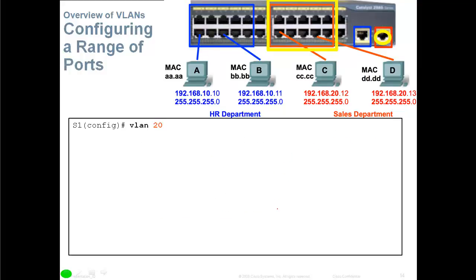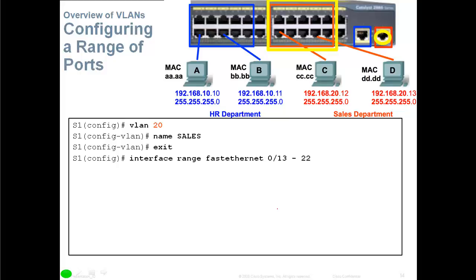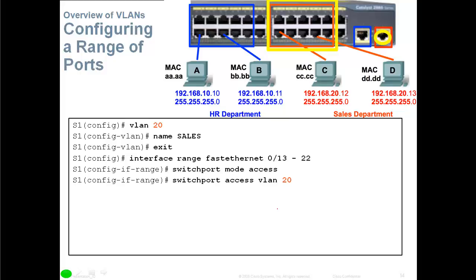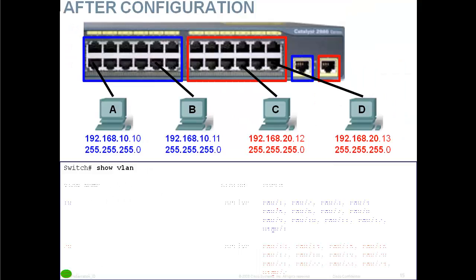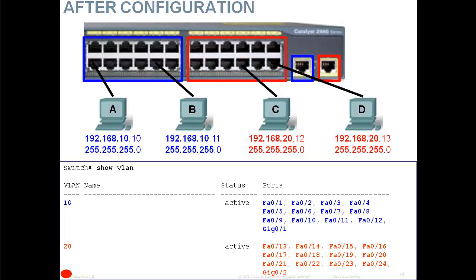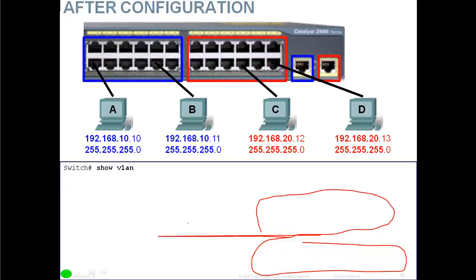Now for VLAN 20: first create the VLAN with 'vlan 20' and give it the name 'Sales'. Exit, then go to 'interface range FastEthernet 0/13-22', set 'switchport mode access', and assign with 'switchport access vlan 20'. Exit again, then configure GigabitEthernet 0/2 with 'switchport mode access' and 'switchport access vlan 20'. To verify, run 'show vlan' — you'll see VLAN 10 is active with its assigned ports and VLAN 20 is active with its assigned ports.